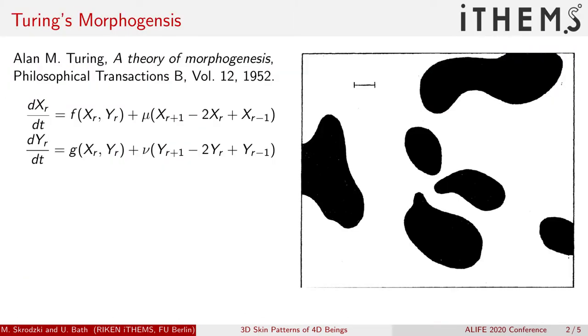Our model is based on the morphogenic system set up by Alan Turing in the 1950s. With his model, Alan Turing aimed at explaining how skin colorings of animals arise.